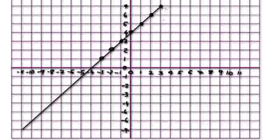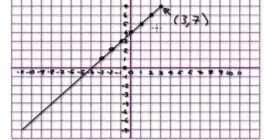Now, what are the coordinates for these points? This point here would be 3, 7. This point here would be 2, 6. And this point here would be 1, 5.